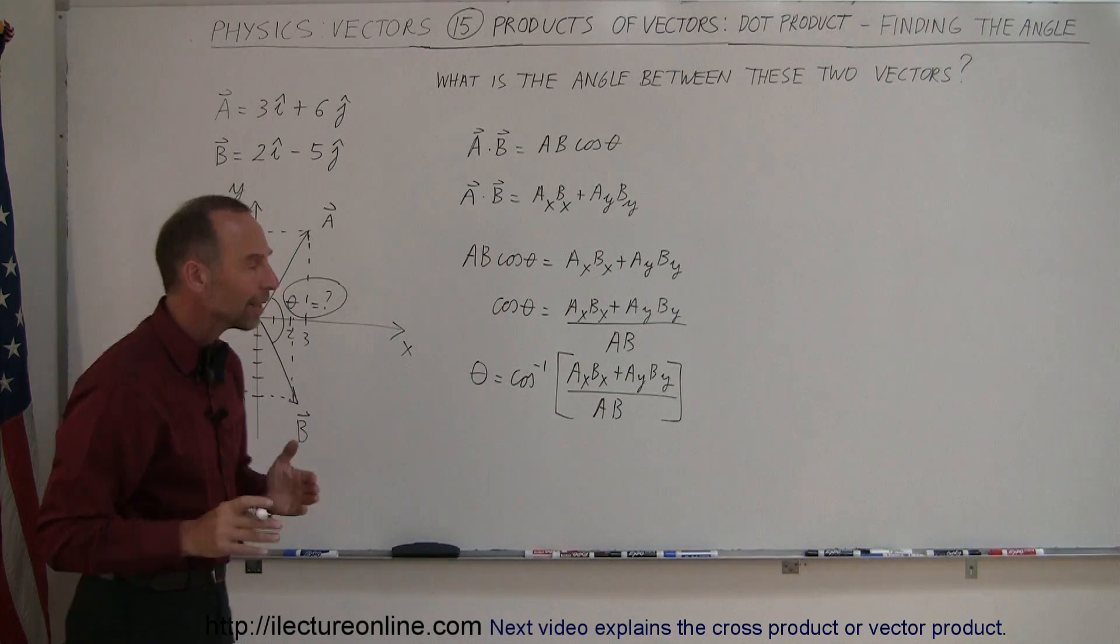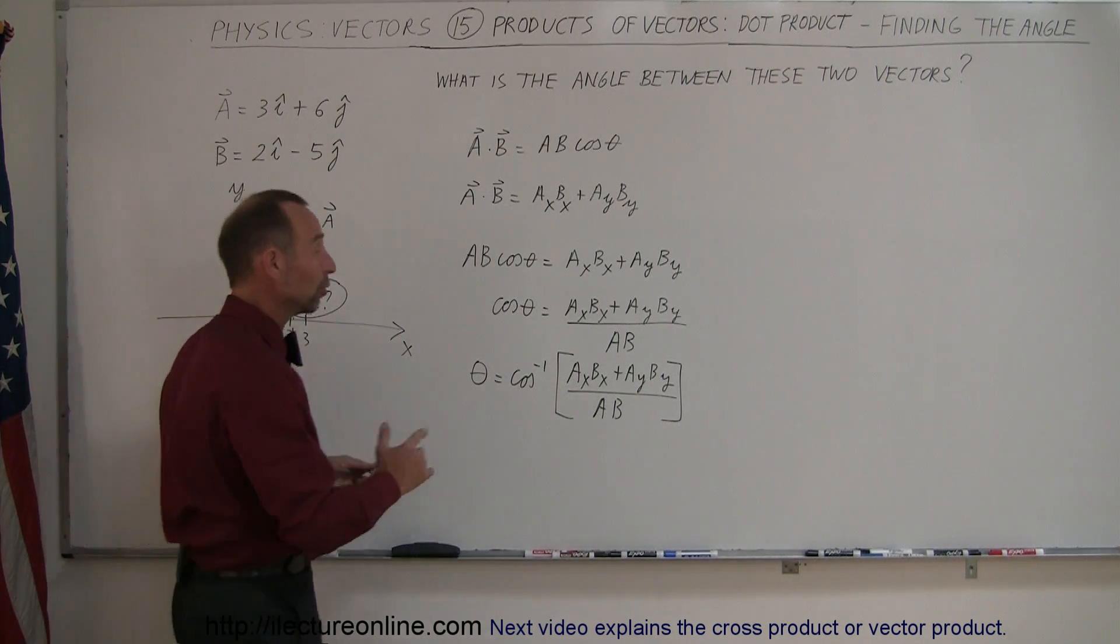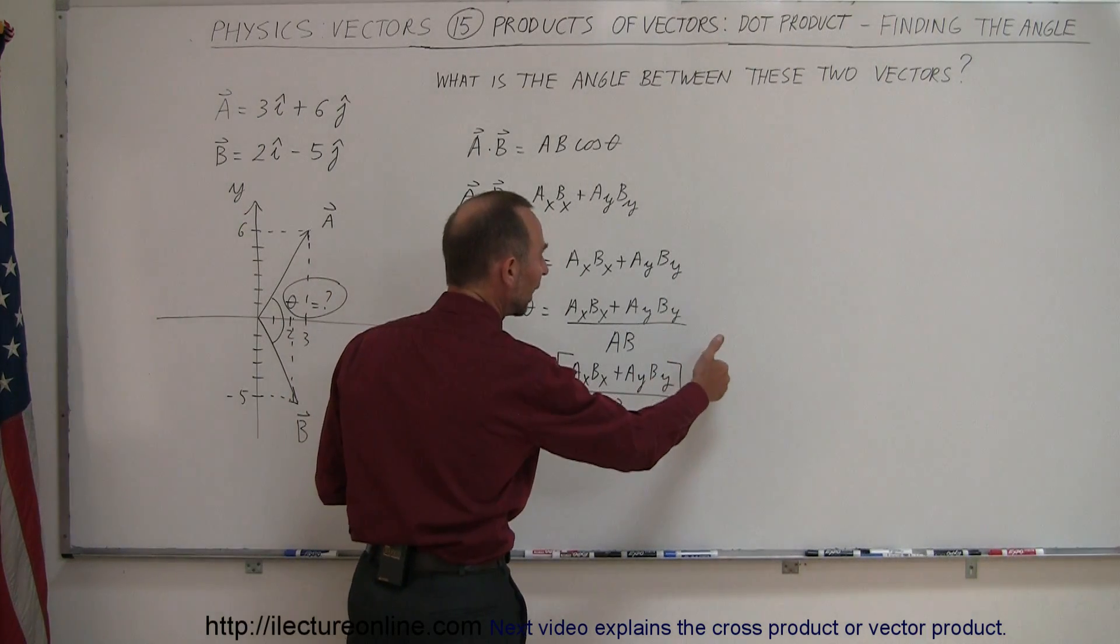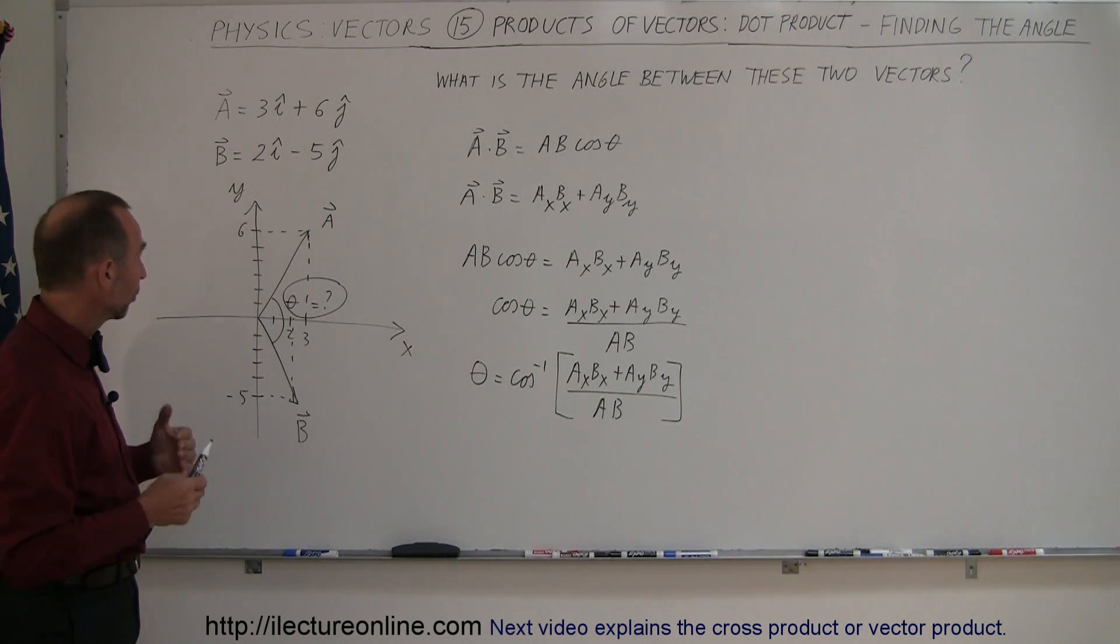Wow, that's how we can find the angle between any two vectors. And of course, if this is in three dimensions, you would still have plus AZ BZ there as well. So, alright, let's put in what we know.